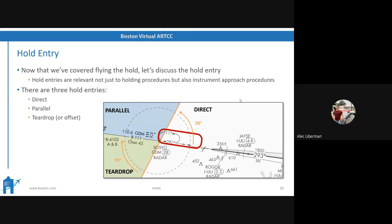Now, the hold entry. Now that we've covered the hold, let's discuss the actual entry. These are relevant not just to holding procedures but to instrument approach procedures — you might have a hold in lieu of a procedure turn. There are three types of hold entries: direct, parallel, and teardrop — also called offset, which is more common in the ICAO world. In the United States, you're almost exclusively using teardrop. These are only recommendations. There's nothing regulatory that says you must fly a direct entry when coming from one side or the other. However, the direct entry in some cases is more efficient, and other entry types make more sense depending on where you're coming from.